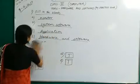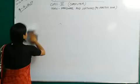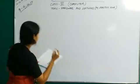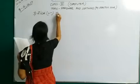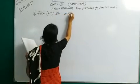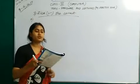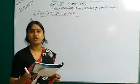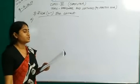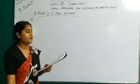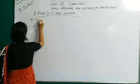Tick the correct option. Number A: Devices used to store data for future reference are called storage devices. The options are input devices, storage devices, output devices, or all of these. The answer is option 2 — storage devices.